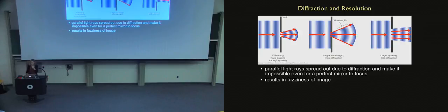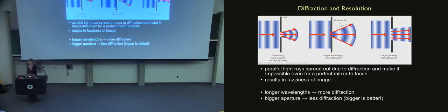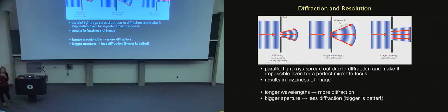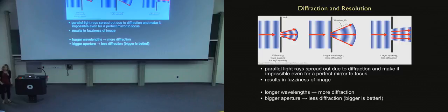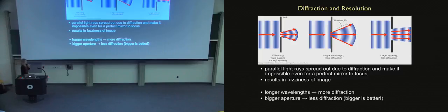Because radio wavelengths are long - centimeters and meters - much longer than optical wavelengths of hundreds of nanometers (10 to the minus nine meters), we need to build even larger detectors to achieve decent resolution.